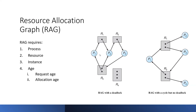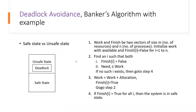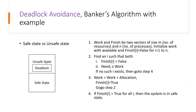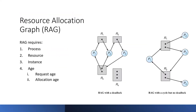If there is no cycle in the system, we can say the system is deadlock-free — there is no deadlock, and the system is in a safe state. Safe state means no deadlock. If there is a cycle, then the system may be in an unsafe state — there may or may not be a deadlock. So a cycle indicates a possible deadlock, but it does not always guarantee one.